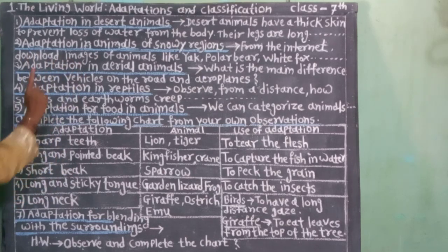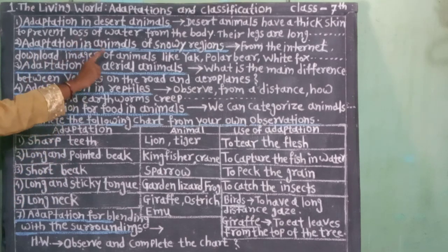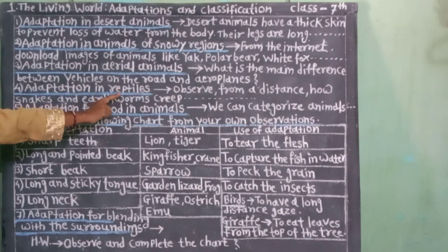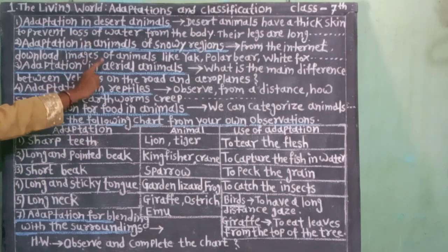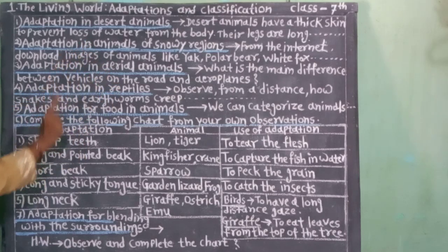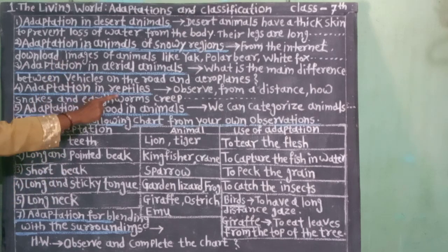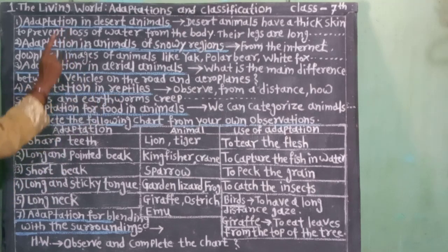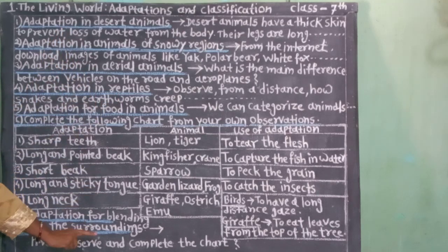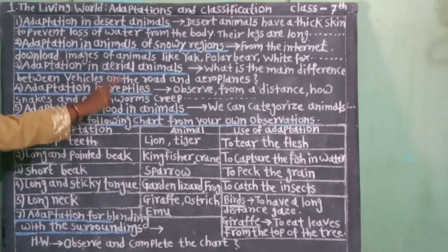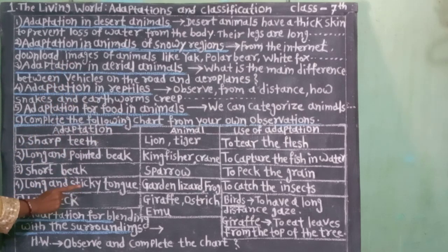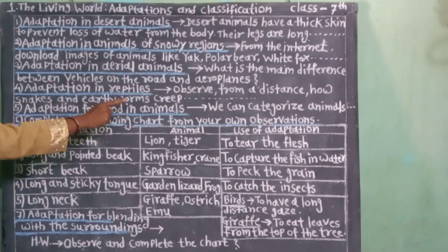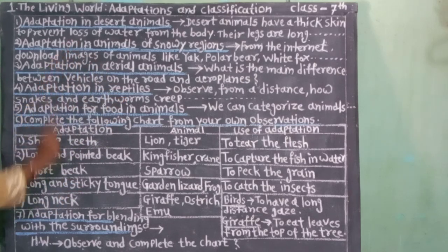The spindle-shaped body of birds minimizes the resistance of air while flying. They have hollow bones, a body covering of feathers, and modification of four legs into wings. Their body is light in weight and adapted for flying.